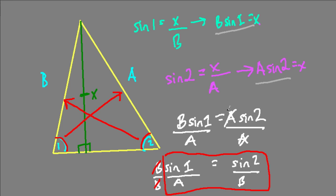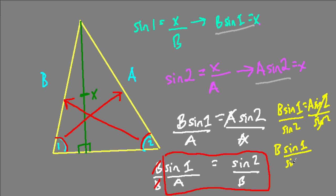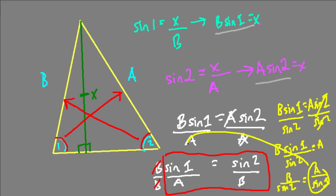We can also flip these things around. Going back to B times the sine of angle 1 equals A times the sine of angle 2, if we divide both sides by the sine of angle 2 and then by the sine of angle 1, we get B over the sine of angle 2 equals A over the sine of angle 1 — the reciprocals also work. Now, what about the third angle? What do we do with angle 3 and side C? Does it equal all this? Yes, the Law of Sines says it does.